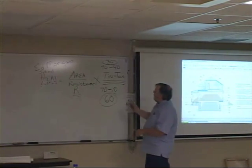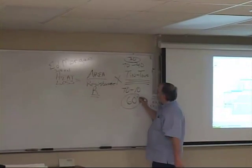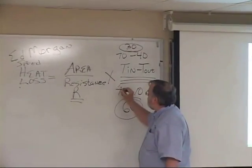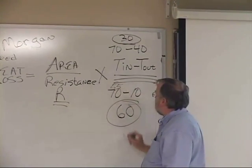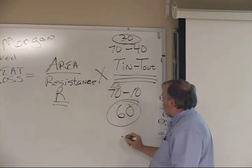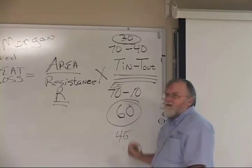One way of reducing this temperature difference is when you go to sleep at night, maybe knock your temperature back to 55. Now instead of this 60 degree temperature difference, there's only 45.